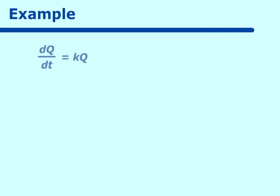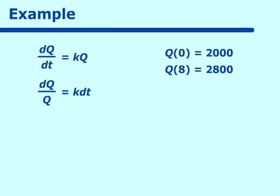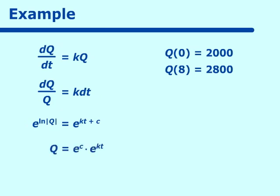So we have our equation dq — the change in the population over change in time — is proportional to k times the number of people or the population. Again we were given two conditions: q of 0 equals 2,000 and q of 8 is equal to 2,800. Separating the variables: dq over q is equal to k dt. Taking the integral gives ln of the absolute value of q equals kt plus c. Raising to the e power: q equals e to the c times e to the kt. Substituting in 0 for t we get e to the c is equal to 2,000, so q is equal to 2,000 e to the kt.